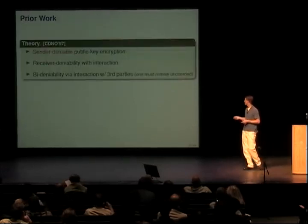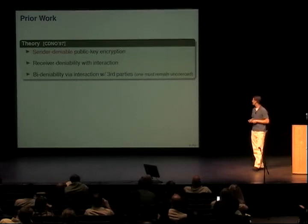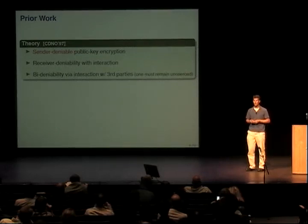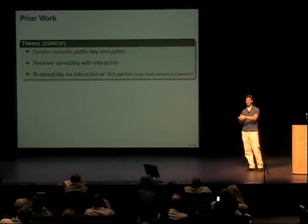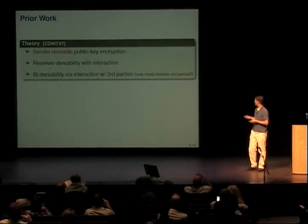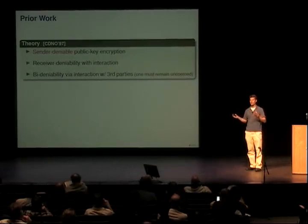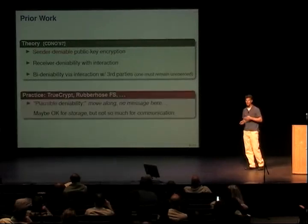There's been some prior work. This notion was first formalized in the CDNO paper — Canetti, Dwork, Naor, and Ostrovsky in '97. They give nice definitions and some feasibility results. They showed that sender-deniable public key encryption is possible, allowing you to coerce only the sender but not the receiver. They also showed that with interaction you can flip roles, coercing only the receiver but not the sender. And they showed that bi-deniable encryption is possible if you interact with third parties, as long as at least one of those parties remains uncoerced.